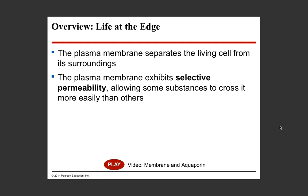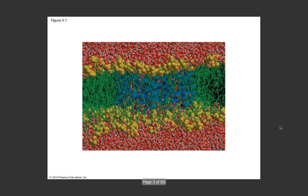The plasma membrane is selectively permeable, which means it's choosy. It gets to decide what things are going to come in and what things are going to go out - it selects what it is permeable to. It chooses what comes in and what goes out in order to keep the cell in homeostasis, which is the fancy word for balance.